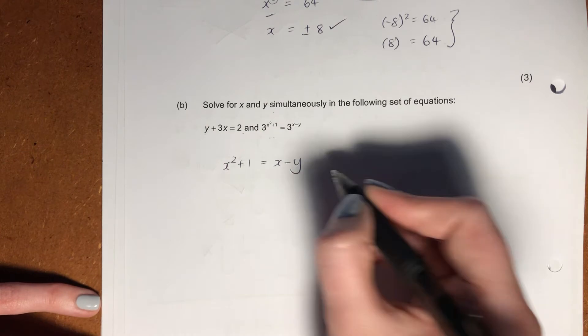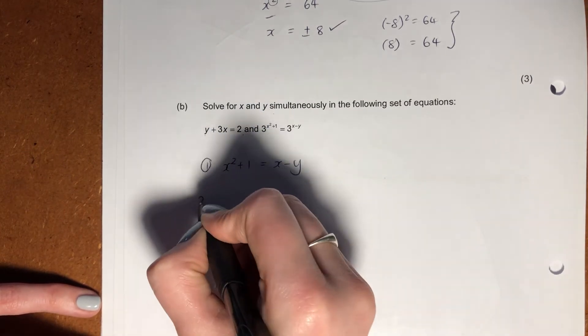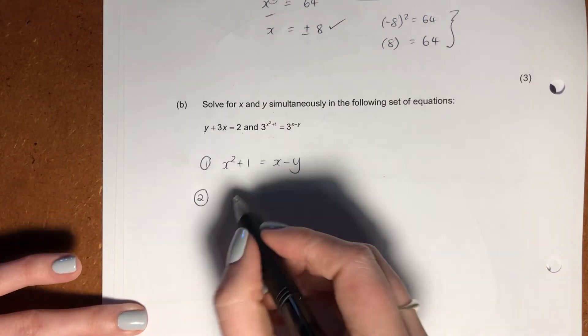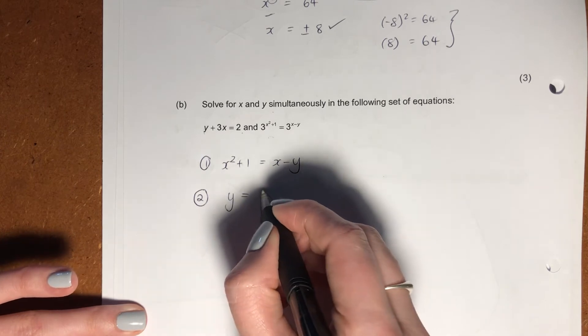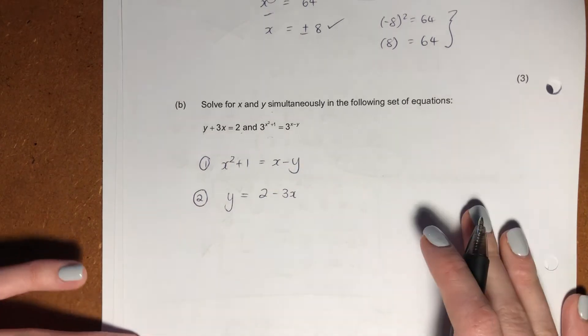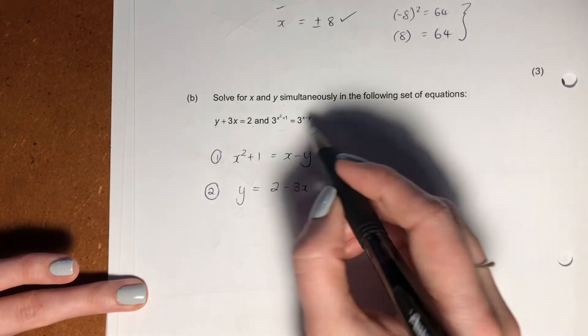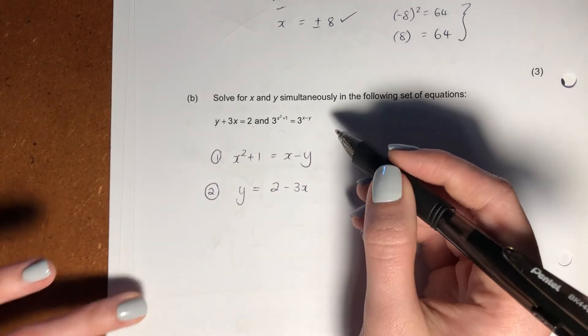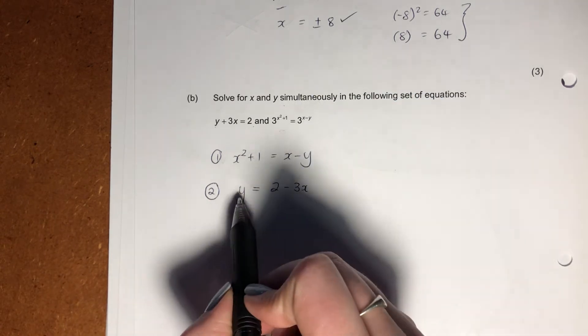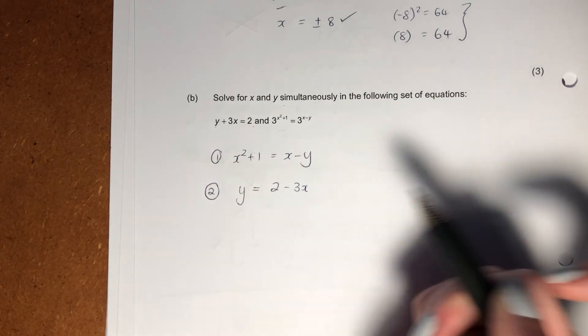So our first equation, I'm going to make that our first equation. Our second equation is this one here, and I'm literally just going to rewrite it so that y is the subject. So now you'll see, here's our first equation. We've got rid of our bases. We're just using our exponents. And here is our linear equation, but I've just done it in terms of y.